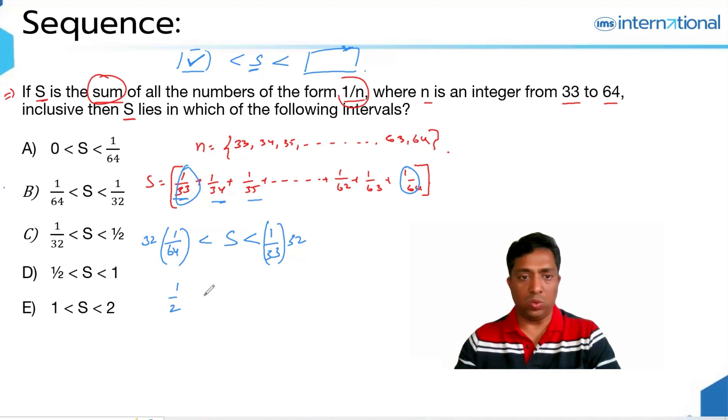So, this gives you 1/2 less than S less than, and 32/33 is almost equal to 1, hence the upper limit for S, you can take it as 1. Now, you see that S is lying between 1/2 and 1, hence the answer to this question must be D.